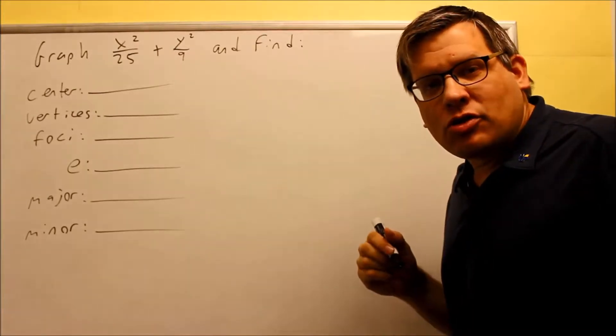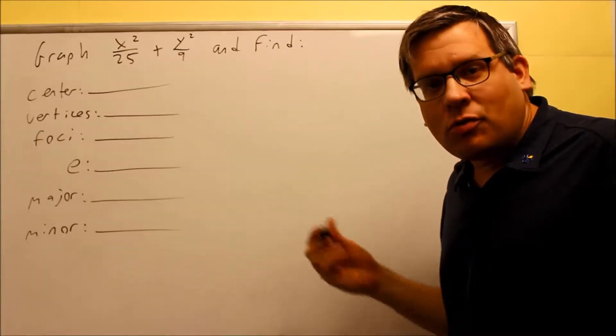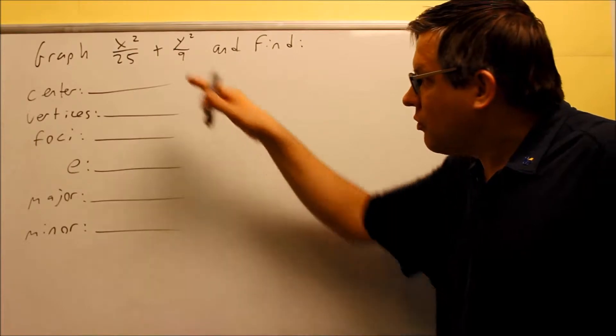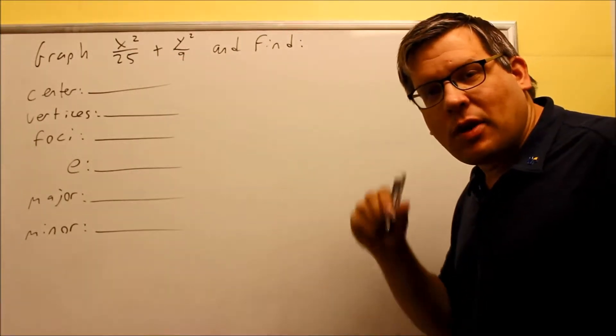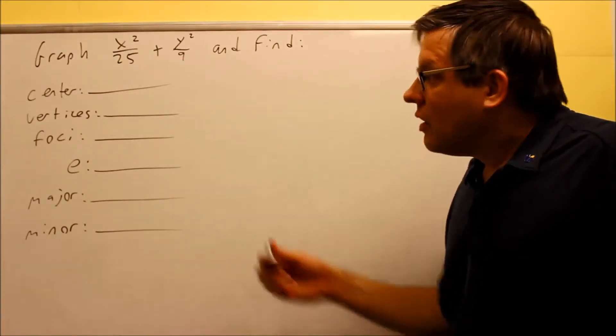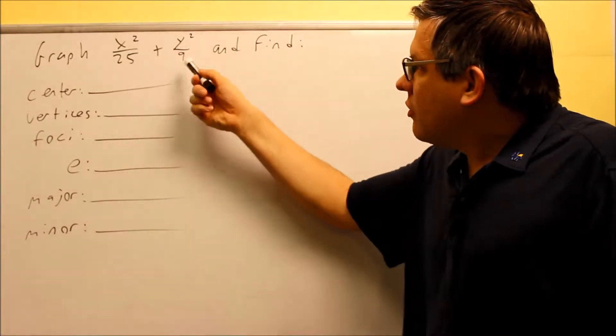Now, the way it works here is your a value is always larger than your b value. You could have a and b equal to each other. In that case, you have a circle, but you're probably not going to find that in this section because we're focusing mostly on ellipses here. Ellipses are basically elongated circles, and so the a value is a larger one.